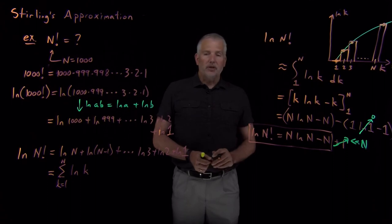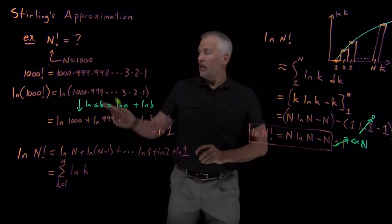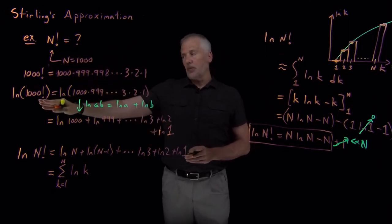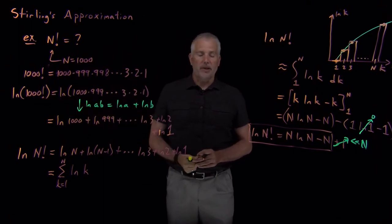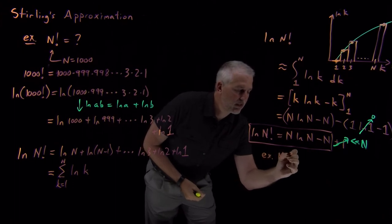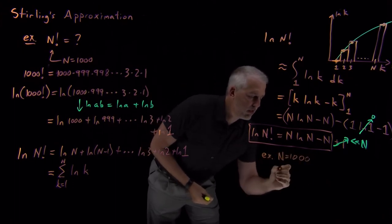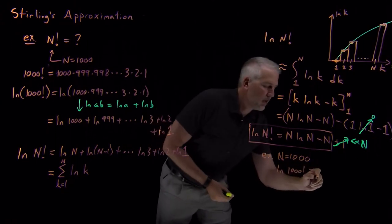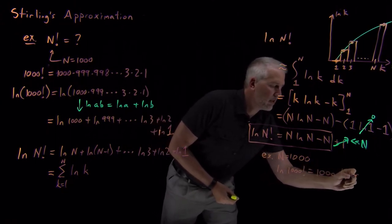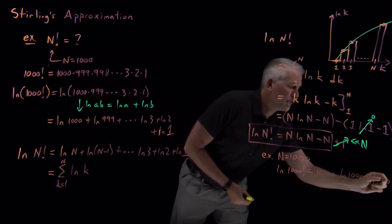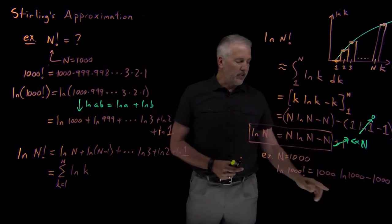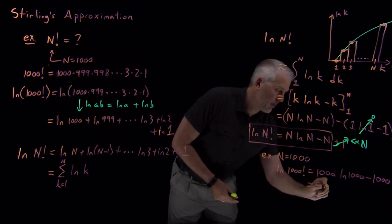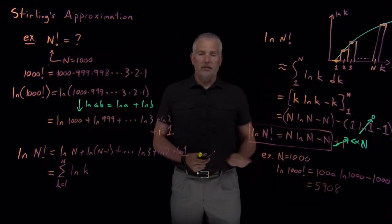So I can show you an example of how that works. Let's go back to our initial problem. We wanted to know what 1,000 factorial was. So when n is 1,000, then the log of 1,000 factorial, according to Stirling, is 1,000 log of 1,000 minus 1,000. That's easy enough to do on the calculator. We can plug those numbers in, and we find that we get 5,908 point something or other. So roughly 5,908.